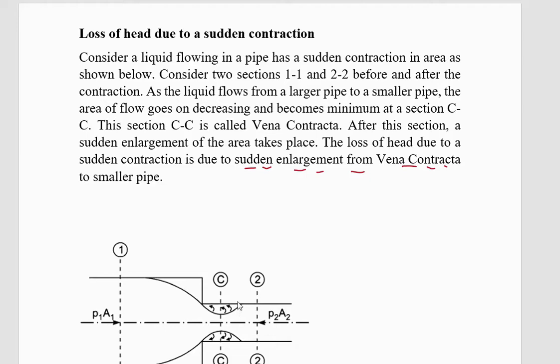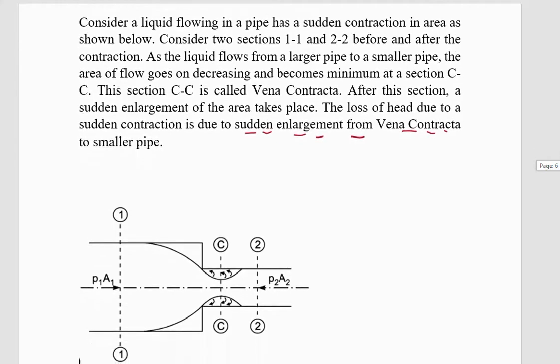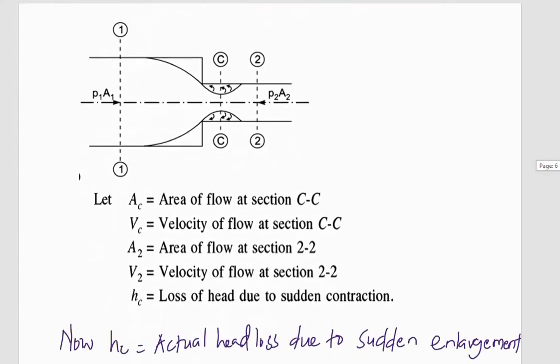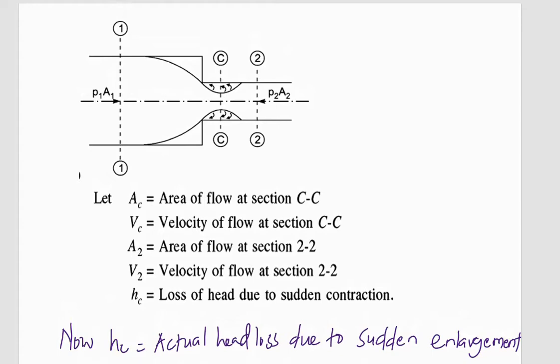In other words, when the fluid leaves section 1-1, it creates a vena contracta at section C. The formation, the enlargement of the sudden enlargement that occurs after section C-C, is actually what causes a head loss in this kind of arrangement. Therefore, if we proceed, we need to know what is the formula for calculating the head loss when there is a sudden enlargement in the pipe.